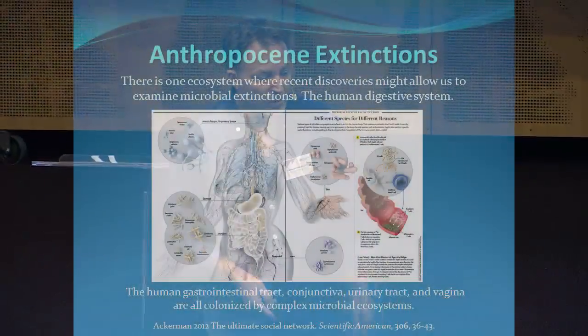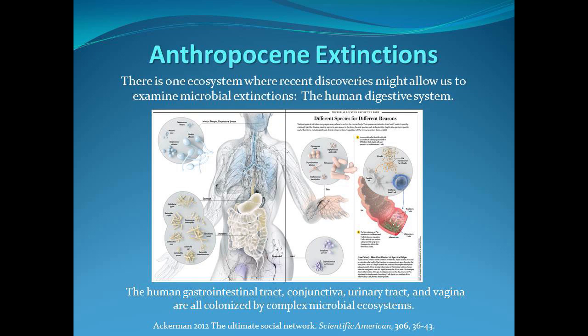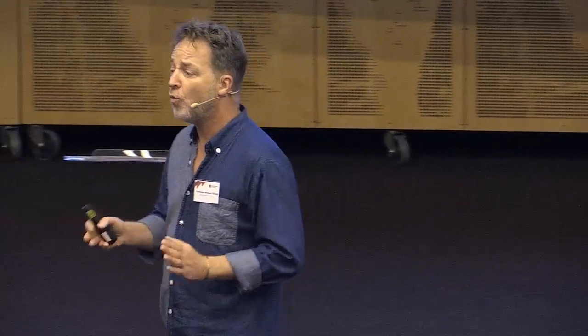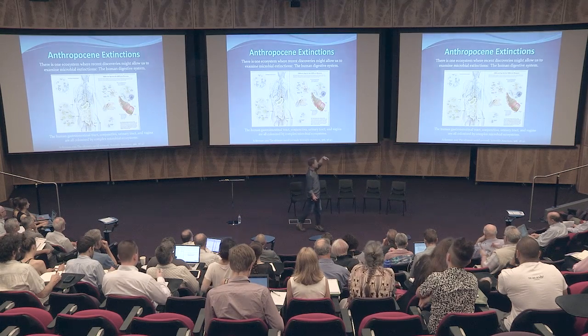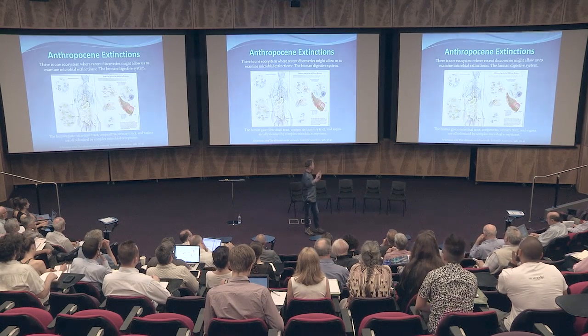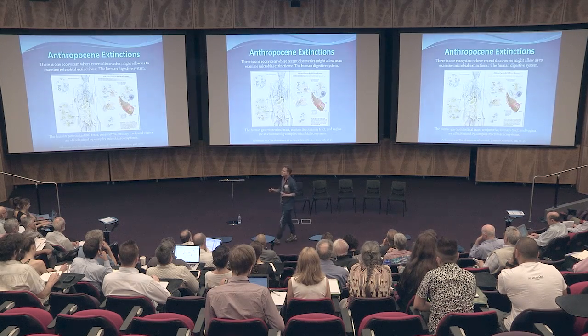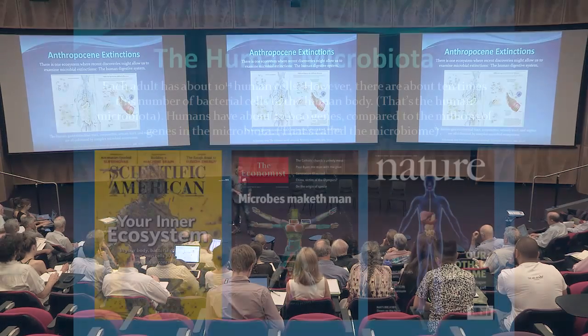What I began to think about was examining extinctions by looking inside ourselves. There's been a theme through this conference about humanity being distinct from nature - this is one reason why we are nature, because we are an ecosystem with huge numbers of organisms. We are not one species; we are many thousands, if you count all the species in our mouths, gut, and skin. Our gastrointestinal tract, conjunctiva, urinary tract, and vagina are all colonised by complex ecosystems of microorganisms.